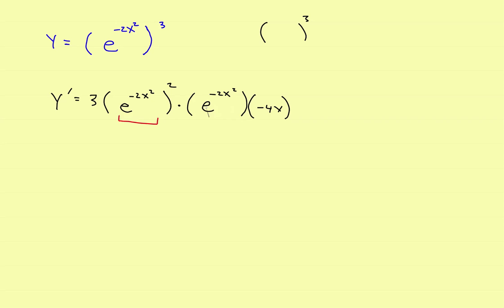So again, the first part is the chain rule. This part right here is the derivative of the outer part, and then this part over here is the derivative of the inner part. So the derivative of the outer part times the derivative of the inner part, but that requires this new rule.